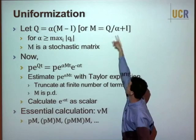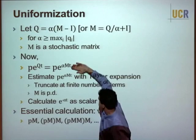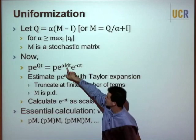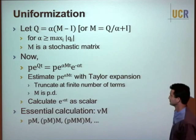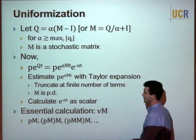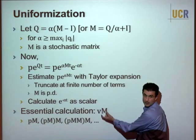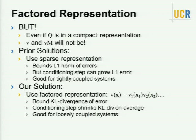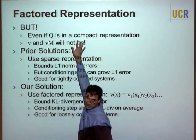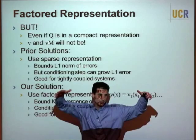Then e^{Qt} can be decomposed: since Q = alpha*(M - I), we get e^{Qt} = e^{-alpha*t} * e^{alpha*M*t}. These two terms share eigenvectors (since I has any eigenvectors), so the product rule applies. The scalar exponential term is precomputed; the remaining Taylor expansion on M has all non-negative terms since M is a stochastic (positive definite) matrix — avoiding the alternating sign instability.